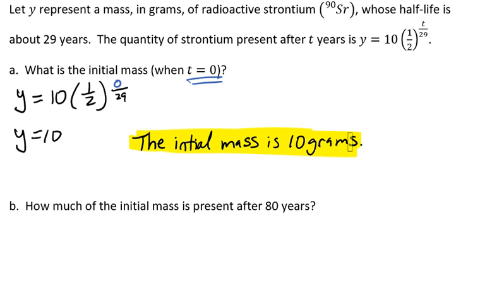Then it asks us how much of the initial mass is present after 80 years. Here, it's asking us to take t and put in an 80. So we'll have 10 times one-half, and we'll raise that to the 80 over 29, and we'll get our y value.